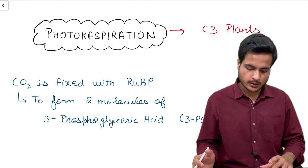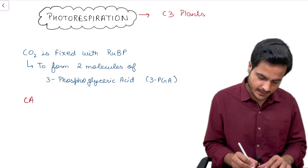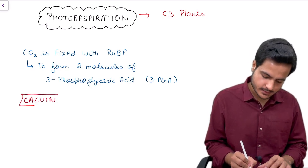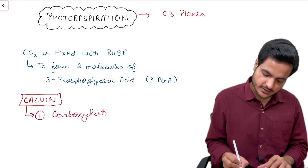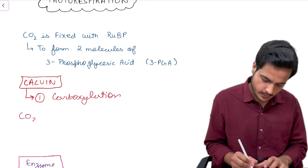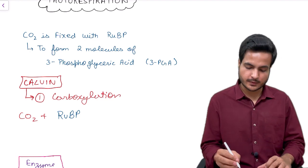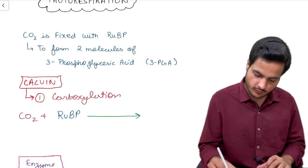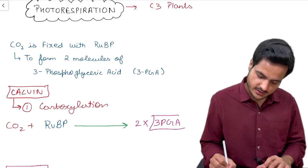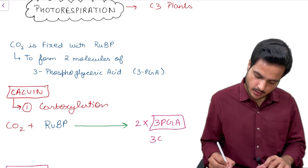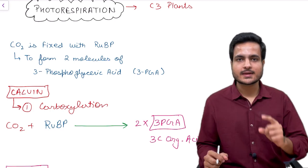Let's start the discussion with the first step of the Calvin cycle. We know that the Calvin cycle has three steps. The first step is carboxylation, in which a carbon dioxide molecule fuses with a 5-carbon keto sugar whose name is ribulose bisphosphate, and this results in the formation of two molecules of 3-phosphoglyceric acid, which is a 3-carbon containing organic acid.